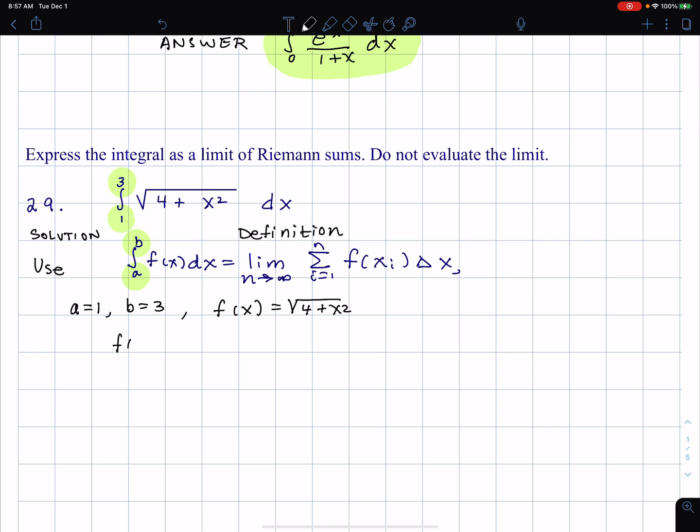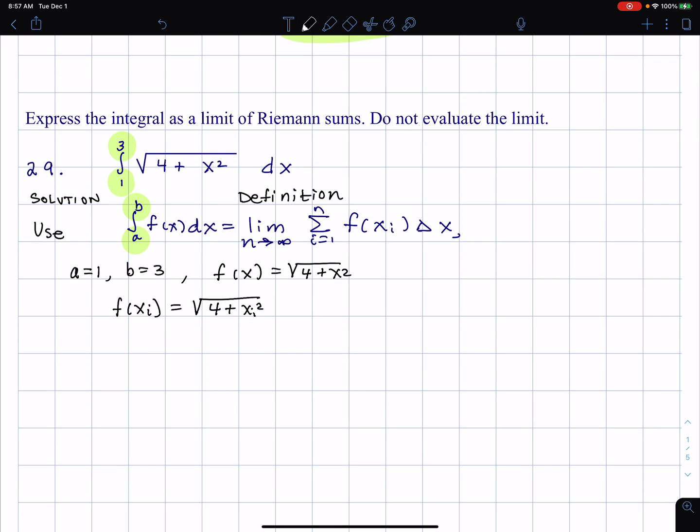Here's our solution. Now it follows then f of xi, if I replace x by xi, is square root of 4 plus xi squared. So we get that this is equal to limit n approaches infinity. What do I mean the whole thing? 1 to 3 square root of 4 plus x squared dx. That's limit as n goes to infinity, summation i equals 1 to n, and I have f of xi, which is square root of 4 plus xi squared delta x. Now this, to me, I feel like I sort of got somewhere. But for the answer in the book, we're going to do more.